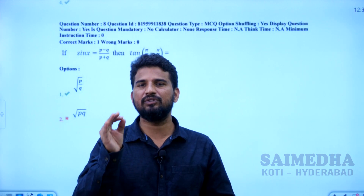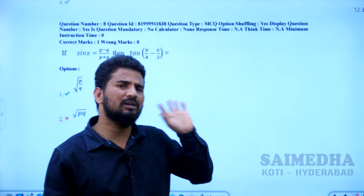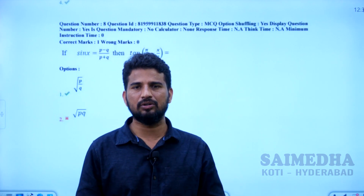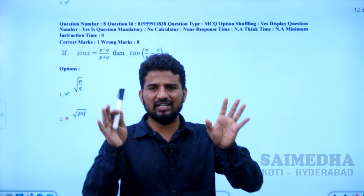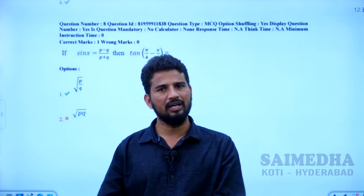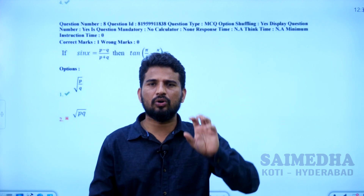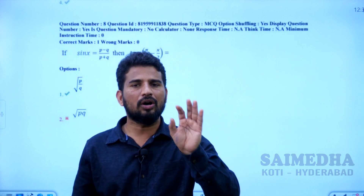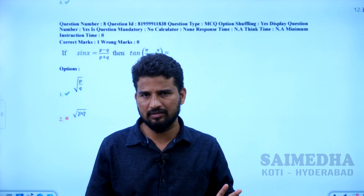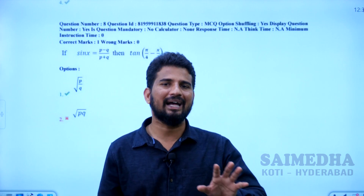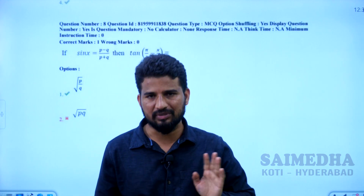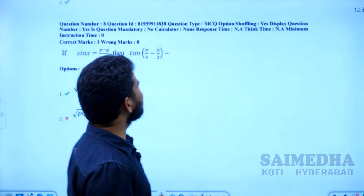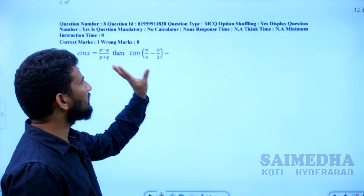I am going to discuss the shift one paper. You have to talk about the question ID — the question ID is very important. If you ask about the student, you have to talk about the subject. I am going to explain the mathematics questions we are having with the key objections. The question ID is 81959911838.